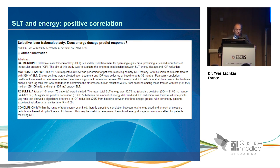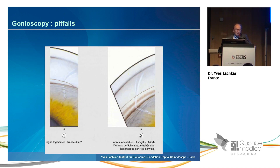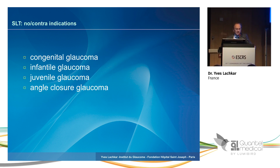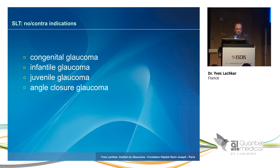Because there is a positive correlation between dose energy and IOP reduction — if you do not treat enough, and if you do not treat enough quadrants, you will have lower effects. Follow-up is quite easy because the only side effect is the intraocular pressure spike, and efficacy is seen at six weeks. Very few inflammation, very few complications, and no serious side effects. There is no contraindication except angle-closure glaucoma and surgical glaucomas, especially juvenile glaucoma.